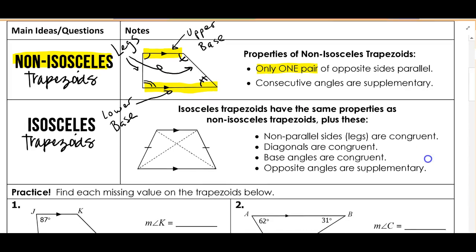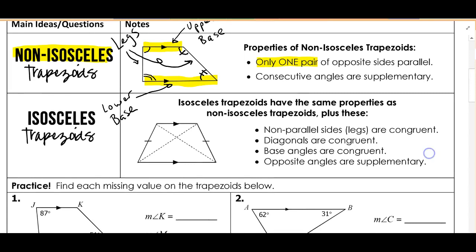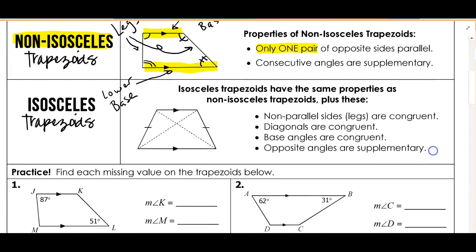Now when we move to an isosceles trapezoid, it's going to have the same parts, except now the non-parallel sides — remember, those are called our legs — are going to be congruent.